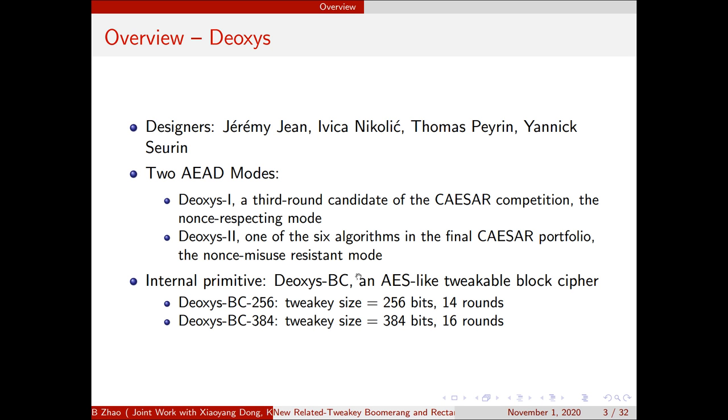Dioxys BC is designed by Jamie Jean, Ivica, Ivanka Niklika, Thomas Peyrin, and Yannick Seurin. There are two AEAD modes of Dioxys BC. Dioxys-1 is a third-round candidate of the CAESAR competition. It is a nonce-respecting mode. And for Dioxys-2, it is one of the six algorithms in the final CAESAR portfolio. It is a nonce-misuse resistance mode. For the two AEAD modes, the internal primitive adapts Dioxys BC, an AES-like tweakable block cipher.